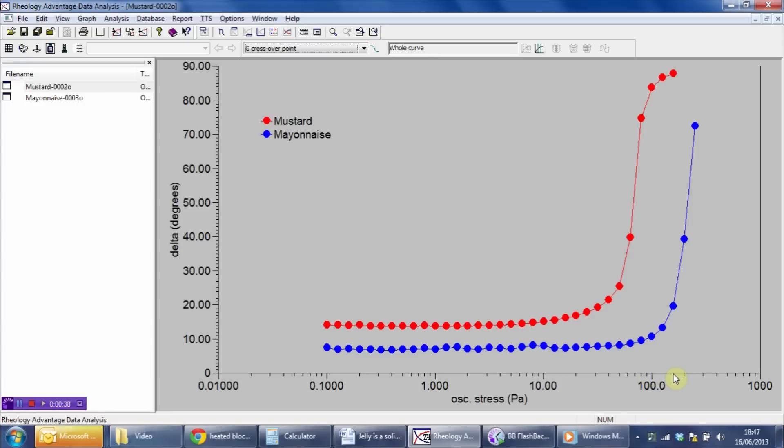Remember, this is on a logarithmic scaling. Now, we talk about yield stress as if it's a single number, but obviously, the yield occurs over a range of stresses. So, it's a process rather than a single event.